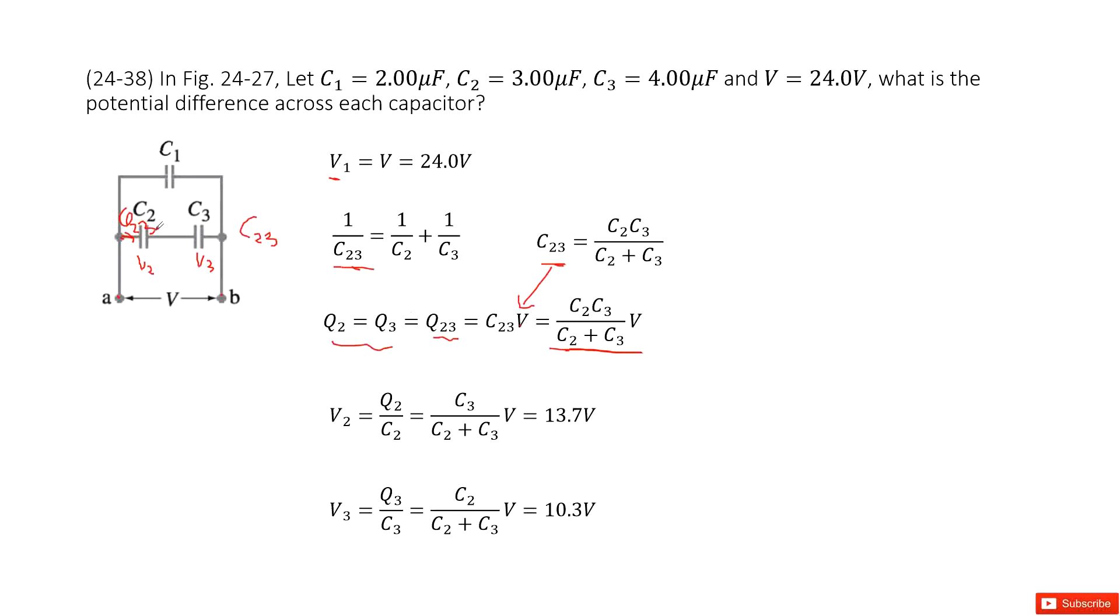Now you can get V2 very straightforwardly. Just use Q2 over C2. Q2 is there, substitute it in, and you get the function that looks like this. Input the quantities and get the answer.